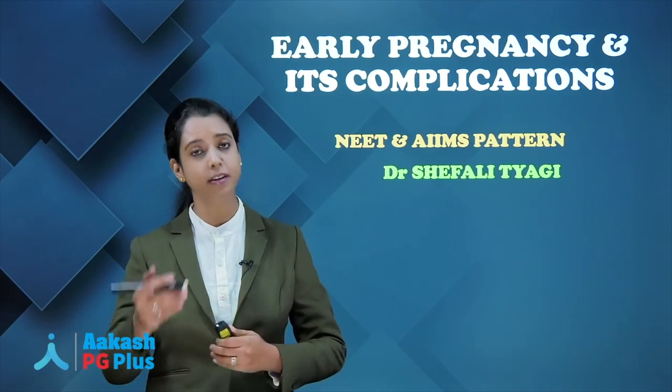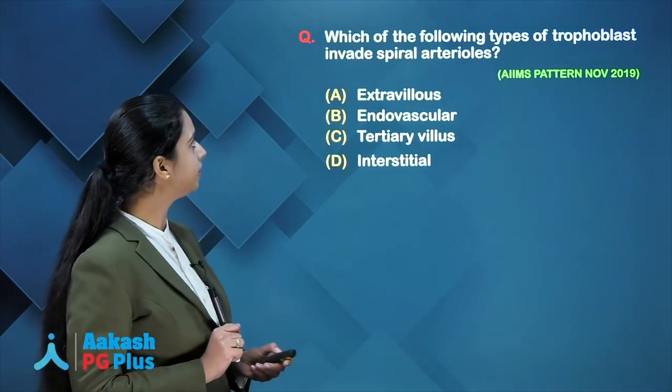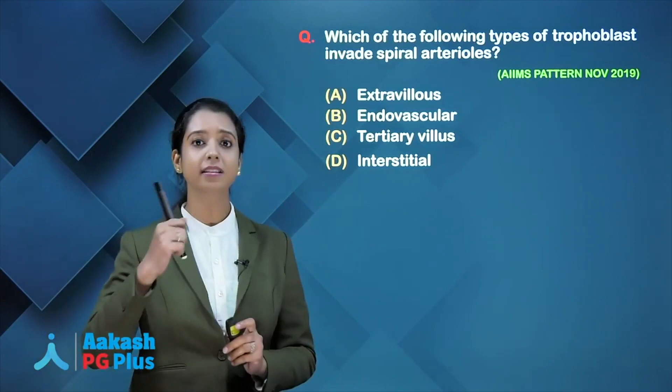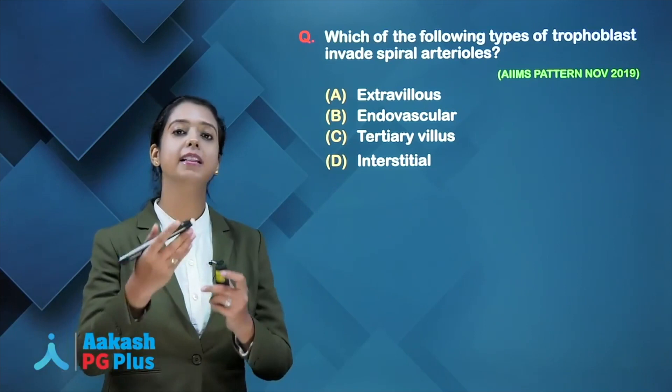Let's start with a question first: which of the following types of trophoblast invades spiral arterioles? To answer this type of question, you need to know what the trophoblast is and what structures it forms in the placenta.